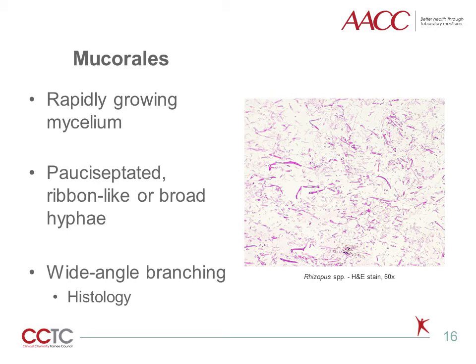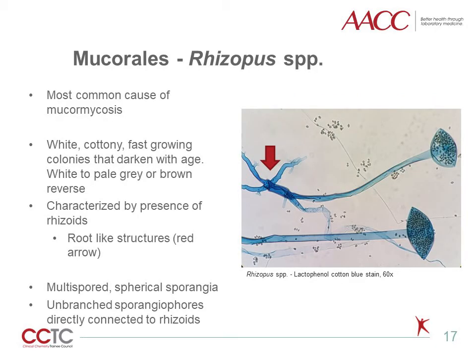Mucorales are characterized by rapidly growing mycelium and pauci-septate, ribbon-like or broad-based hyphae. Wide-angle branching is usually seen on histology slides. Rhizopus species is the most common type of mucormycosis. It forms wide, fast-growing colonies that darken with age, and the reverse is white to pale gray or brown. Microscopically, it is characterized by having rhizoids or root-like structures, pointed by the red arrow. The sporangiophores are mostly brown, unbranched, and directly connect to the rhizoids. The sporangia are multispored and spherical, and the conidia can be brown.